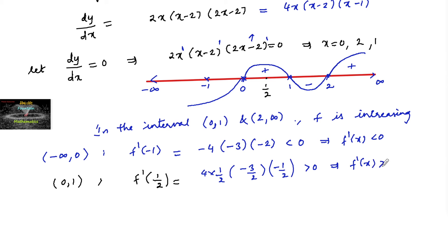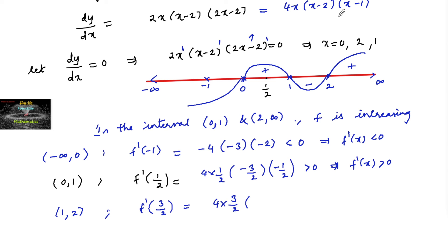For the interval (1, 2), take x = 3/2: f'(3/2) = 4·(3/2)·(3/2 - 2)·(3/2 - 1) = 4·(3/2)·(-1/2)·(1/2). This gives a negative value, so f'(x) < 0 — the function is decreasing on (1, 2).